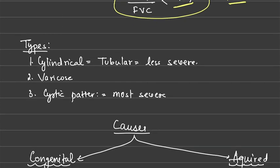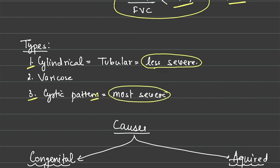The types of bronchiectasis are divided into three types based on location and morphology. First is cylindrical, also known as tubular — it is the least severe. The second is varicose type, which is intermediate in severity. The third is cystic pattern, which is the most severe, with cystic dilatation of bronchi and terminal bronchioles.